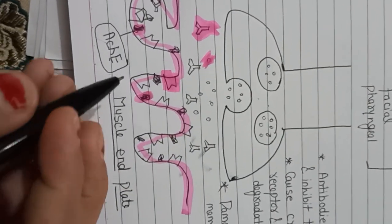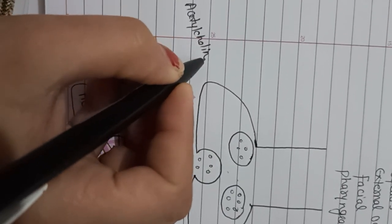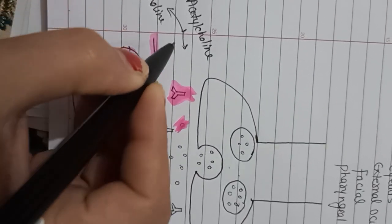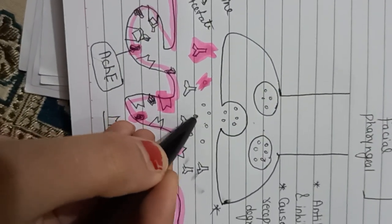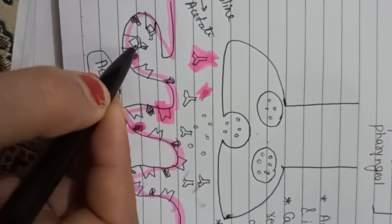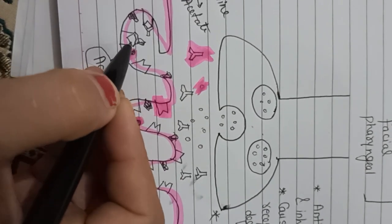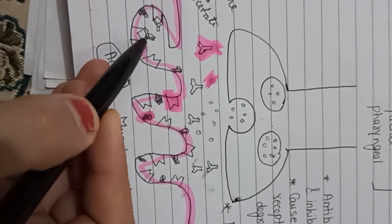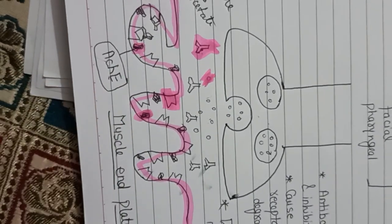When acetylcholine is metabolized and broken down, it will not bind to the receptor, and when it does not bind, the muscle will not contract — causing muscle weakness. There are two reasons for this: one is acetylcholine breakdown, and the other is that abnormal antibodies prevent acetylcholine from binding.